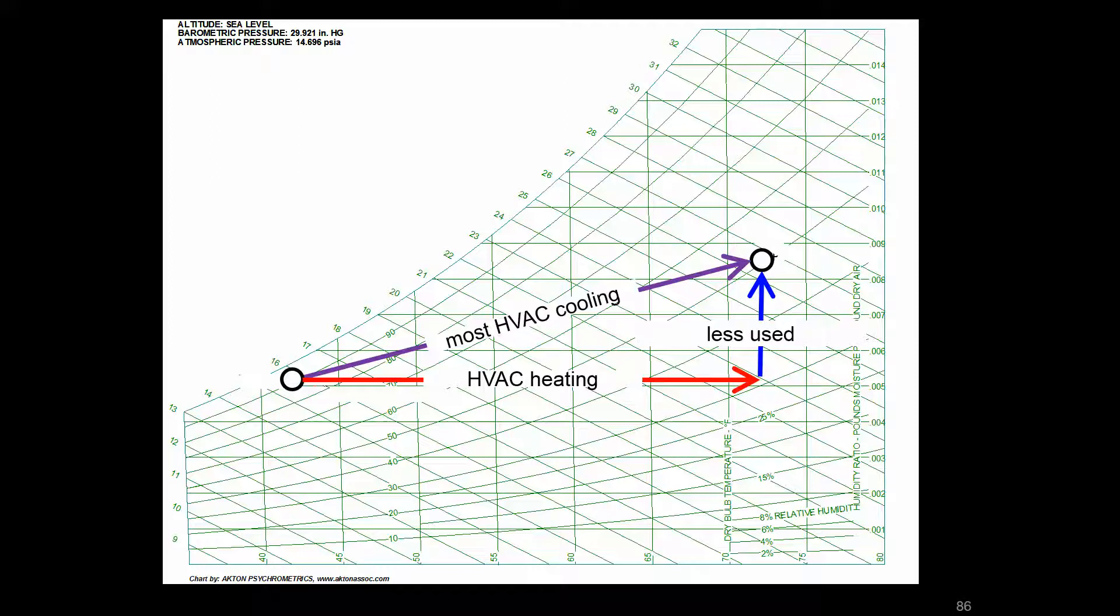We're going to go a bit more into where these numbers come from and which ones we use and how we use them. But I want to point out that for our purposes, we're really going to be looking at the purple and the red, the total and the sensible. There may be some applications where we do want to look at the latent component separately, but I would say that's less used in commercial HVAC.